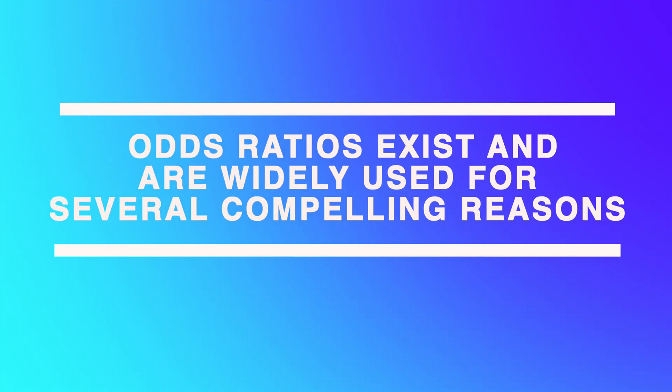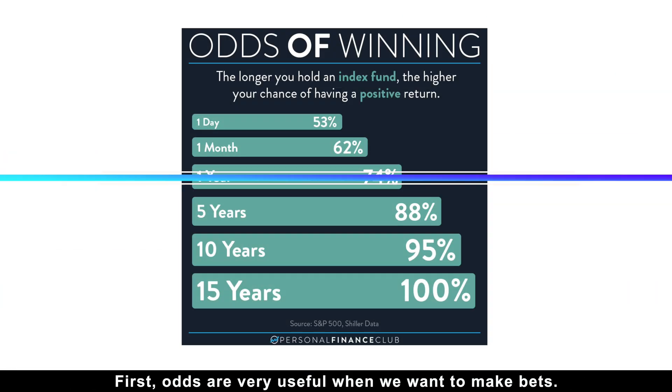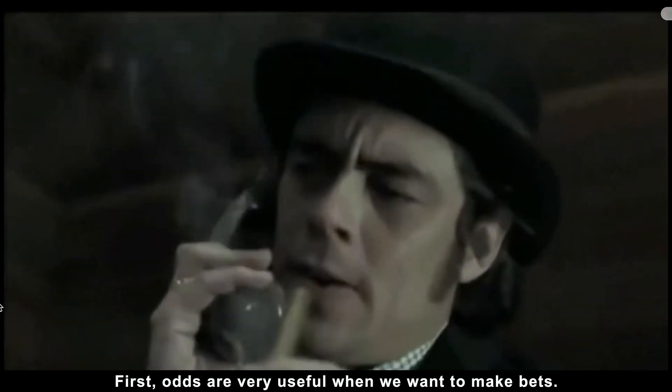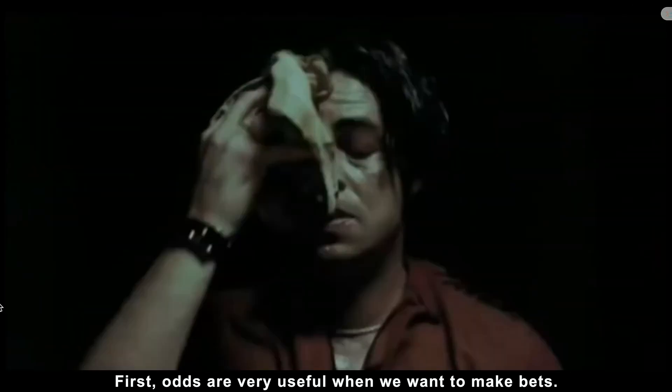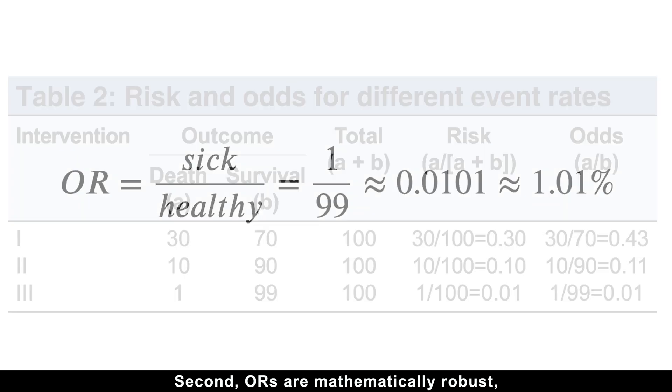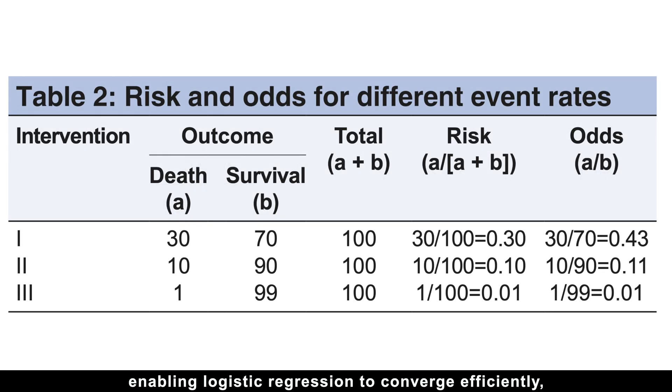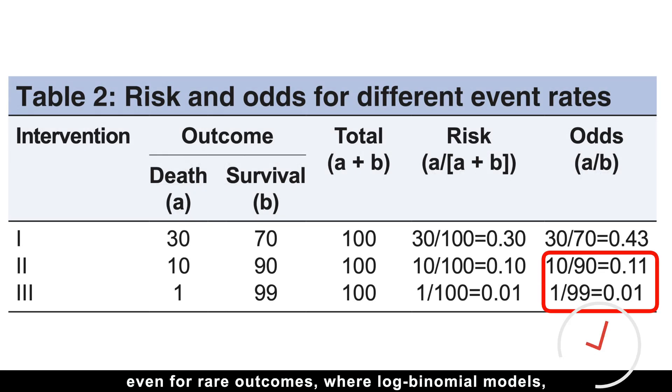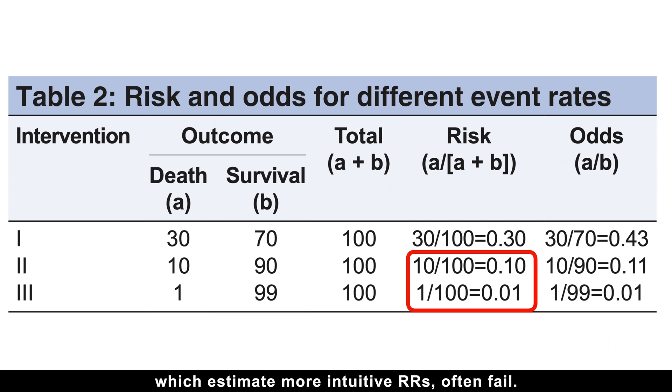Well, odds ratios exist and are widely used for several compelling reasons. First, odds are very useful when we want to make bets. Second, odds ratios are mathematically robust, enabling logistic regression to converge efficiently, even for rare outcomes, where log-binomial models, which estimate more intuitive risk ratios, often fail.